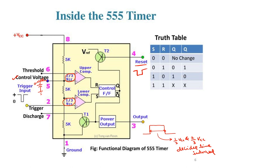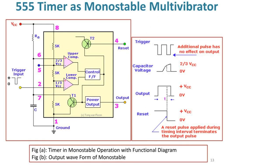The 555 timer can be operated in two modes. One is monostable multivibrator and another is astable multivibrator. In the monostable multivibrator application, the external components connected are a resistor and a capacitor, and we take the output from pin 3.